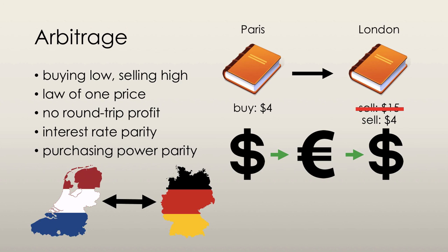If most goods and services cost more in one country than another, then the currency of the first country is said to be overvalued, and so depreciation would restore purchasing power parity in the long run. But if most goods and services cost less in one country than another, then the currency of the first country is said to be undervalued, and so appreciation would restore purchasing power parity in the long run.